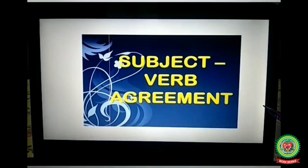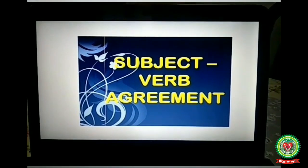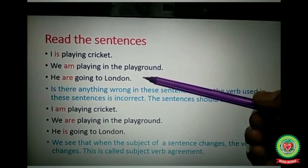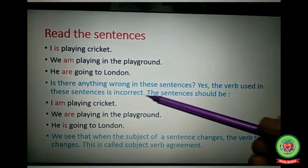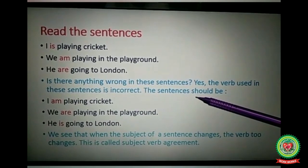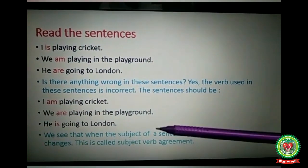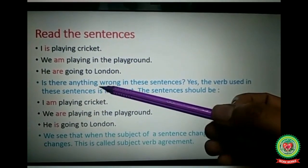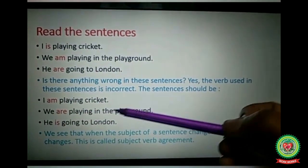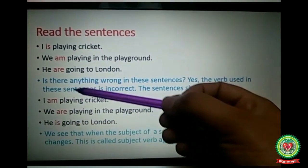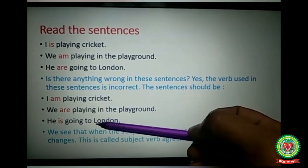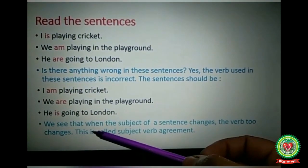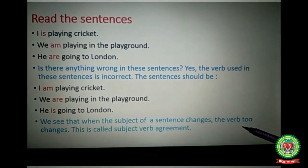Please open your book, class number 28, page number 102. Now read these sentences: 'I is playing cricket,' 'We am playing in the playground,' 'He are going to London.' Is there anything wrong in these sentences? Yes, the verb used in these sentences is incorrect. The sentences should be: 'I am playing cricket' — with 'I' we always use 'am' in present tense. 'We are playing in the playground' — 'we' is plural so we take the plural word 'are.' 'He is going to London' — 'he' is singular so we take the singular verb 'is.' We see that when the subject of a sentence changes, the verb too changes.